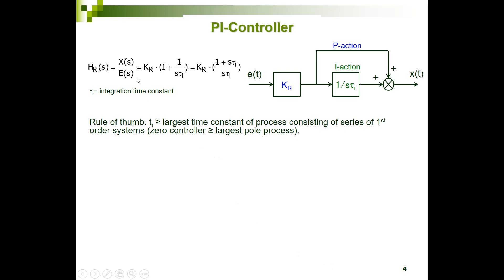A PI controller has a transfer function where the output divided by the input is equal to KR times (1 plus 1 over S times tau_i). KR times 1 is the proportional part of this PI controller, and KR times 1 over S times tau_i is the integral part. So we have a proportional part and an integrating part, where 1/S is the integrator in the Laplace domain.